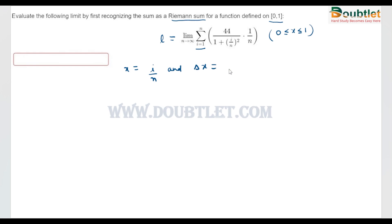And delta x equals 1/n, then we can write this limit as L equals sigma i equals 1 to n of f(x_i) times delta x.